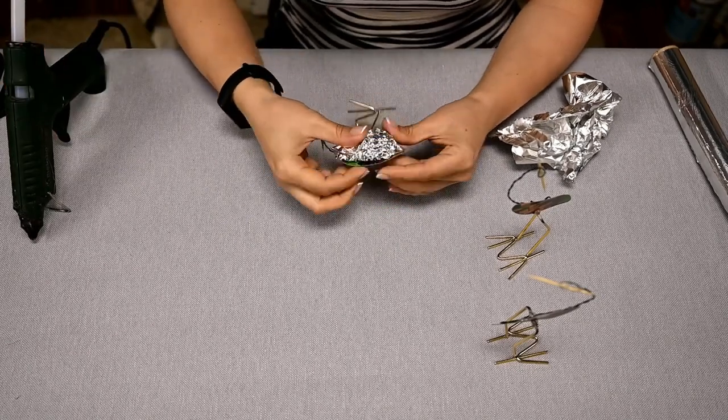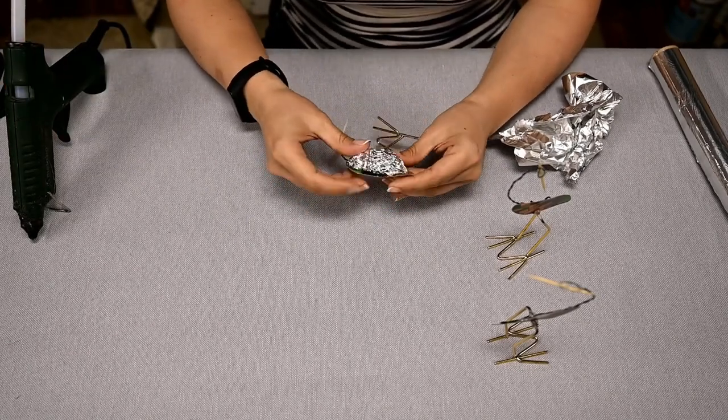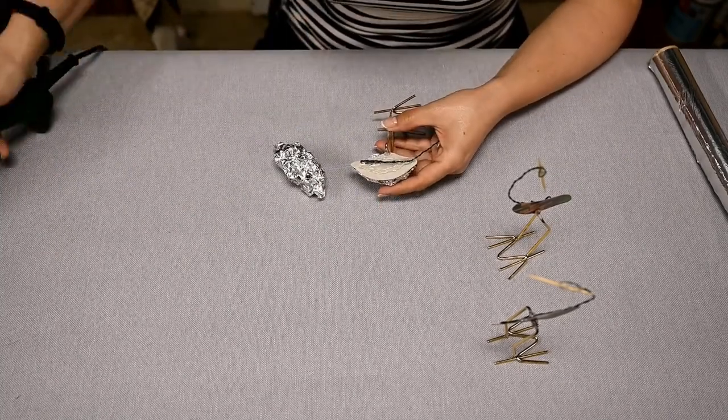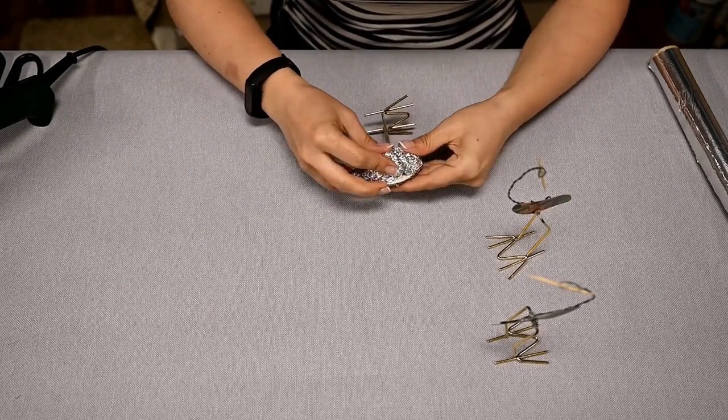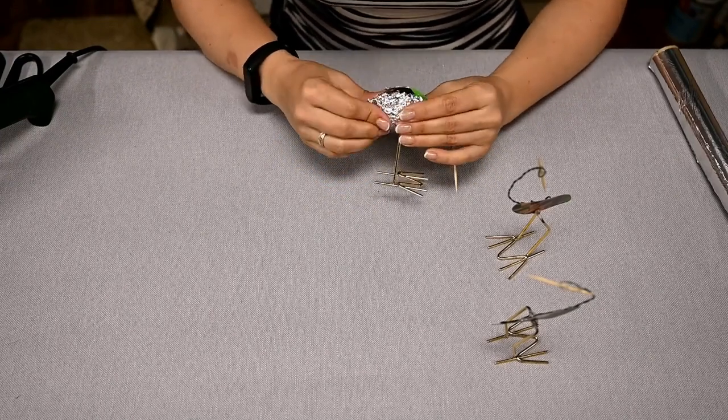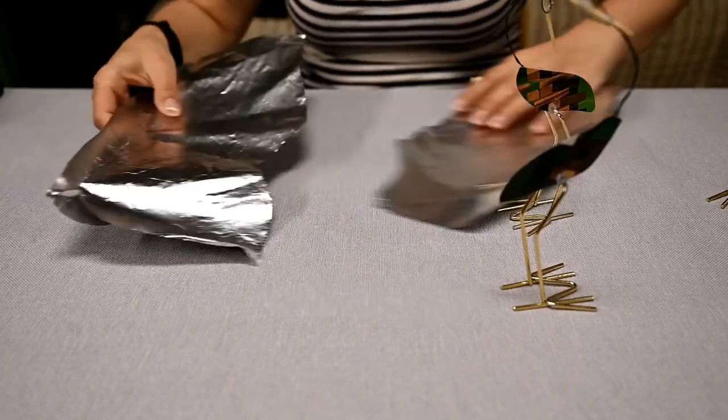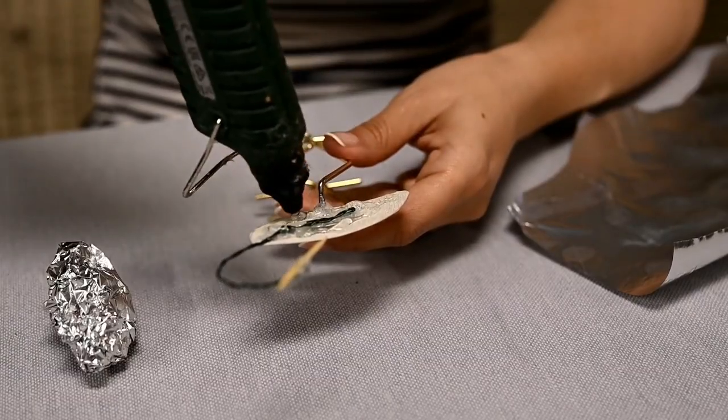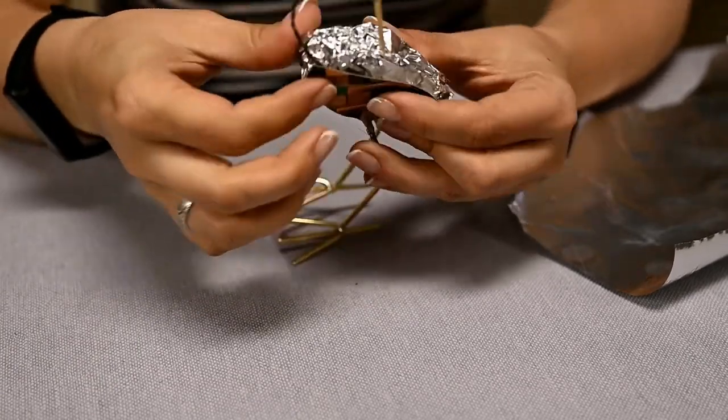After that I'll make the bodies. I'm taking aluminum foil, crumpling a piece, hot gluing on one side of a bird and adjusting the shape right on the cardboard. I'm repeating the same on the other side.